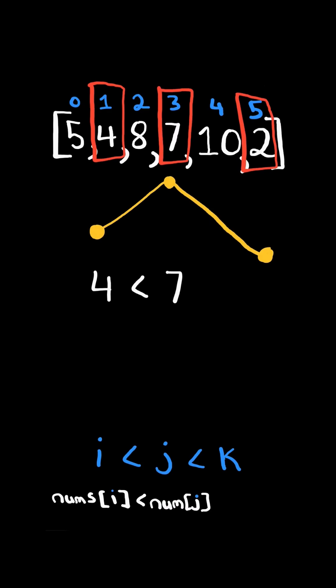Nums at i must be strictly less than nums at j and nums at j must be strictly greater than nums at k. If this is true, sum up the values of the triplet.